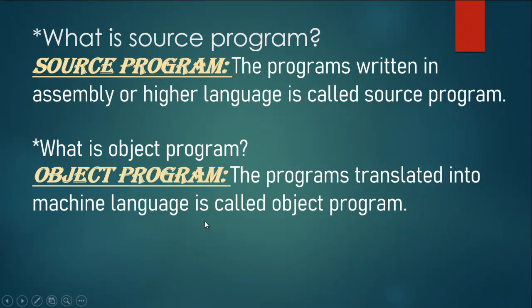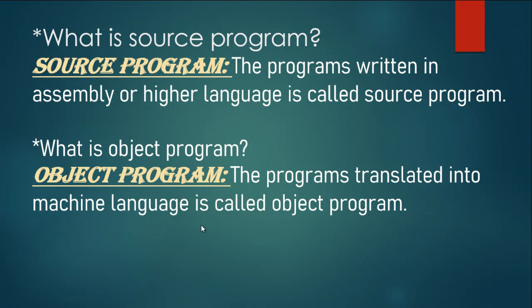What is a source program? The programs retained in assembly or higher level language are called source programs. What is an object program? The programs translated into machine language are called object programs.